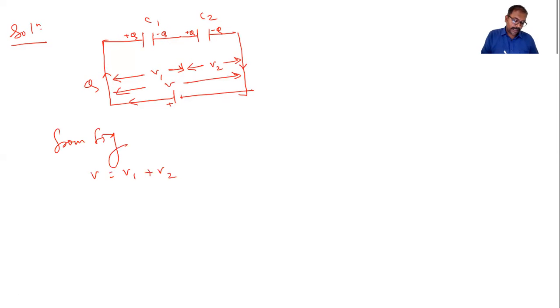Now we have the formula C equals Q by V. By using that formula we can write V equals Q by C. Similarly we can write V1 equals Q by C1. We cannot write Q1 because the same charge flows through both capacitors in series. V2 equals Q by C2.